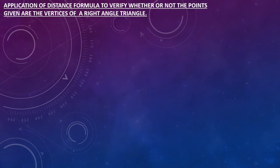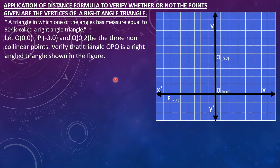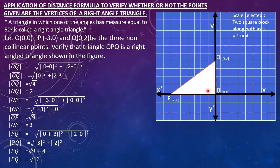Now we are going to see how to apply the distance formula to verify whether or not the points given are the vertices of a right angle triangle. A right angle triangle is a triangle in which one of the angles measures 90 degrees. Let O(0,0), P(-3,0) and Q(0,2) be three non-collinear points. Verify that triangle OPQ is a right angle triangle as shown in the figure. Here we have plotted the given points and joined them, taking a scale of 2 square blocks along both axes equal to 1 unit.